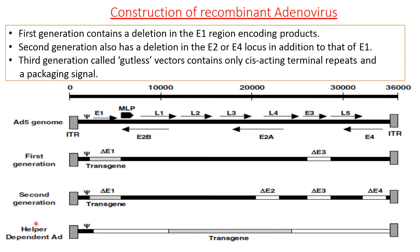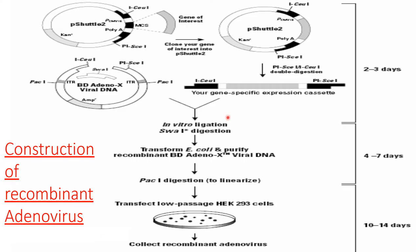In the third generation, a gutless vector — also called a helper-dependent adenovirus — is produced. This contains only the cis-acting terminal repeat and a packaging signal. This adenovirus has been used in gene therapy work.